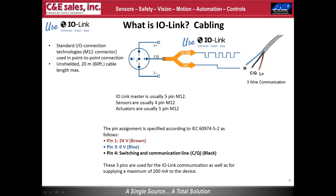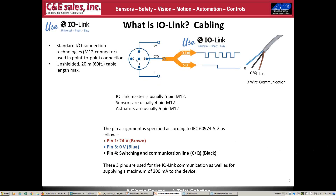Regarding actuators with end-of-travel limit switches: while Siemens does sell limit switches, those are discrete devices and not currently IO-Link. Such IO-Link devices may exist from other vendors but are not currently available through C&E's product line.